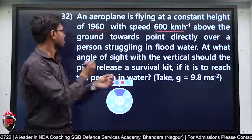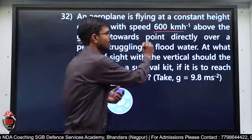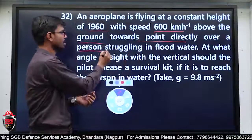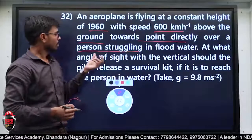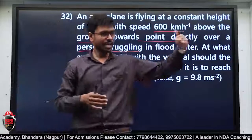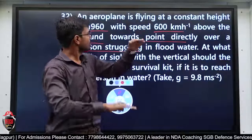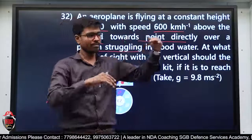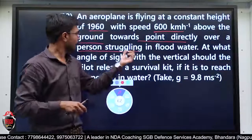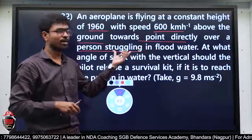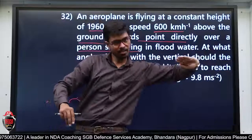Toward a point directly over a person struggling in flood water। Plane आ रहा है 600 km per hour की speed से, और height 1960 दी हुई है। पानी में, बाढ़ में, flood water में आदमी डूब रहा है — उसकी तरफ यह plane ऐसे आ रहा है।